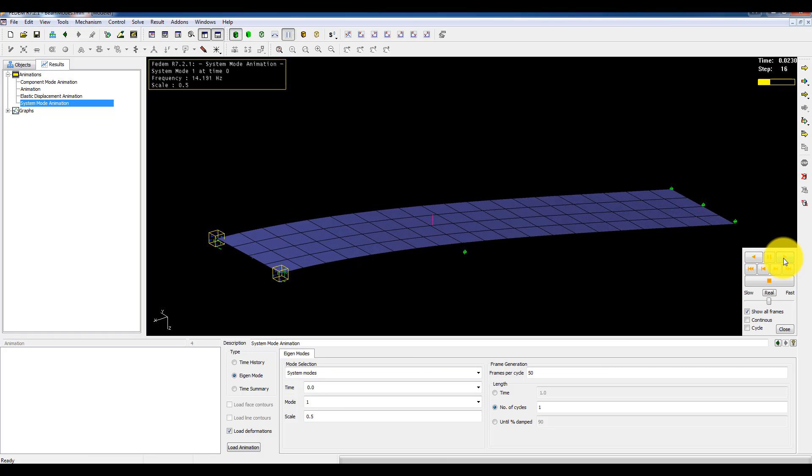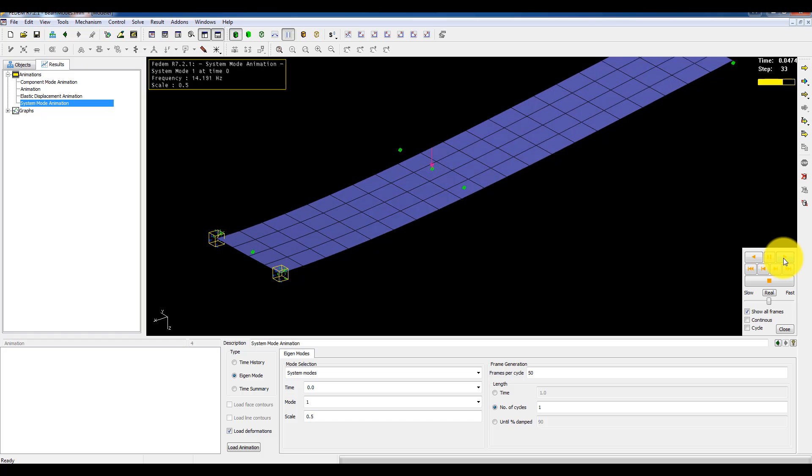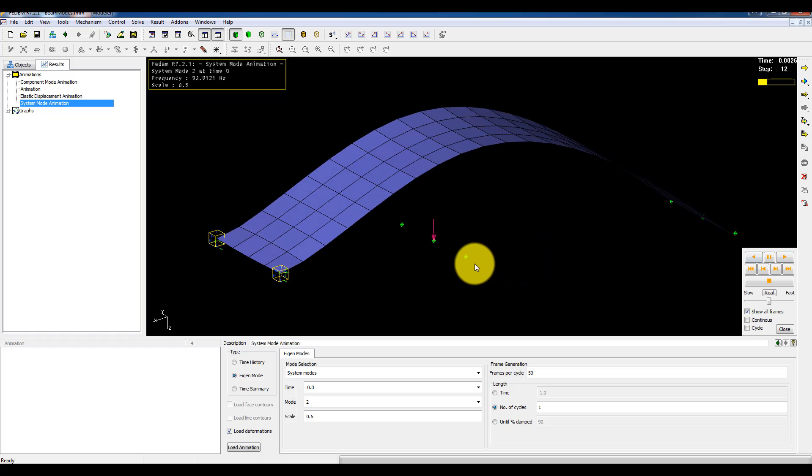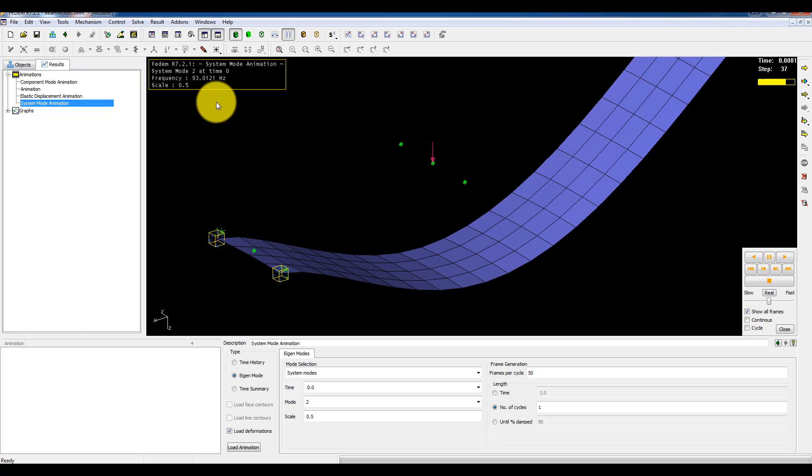And this is the first springboard mode shape. It has a frequency of 14 Hz. Then I want to look at the next system mode. This is the second mode and it has an eigenfrequency of 93.